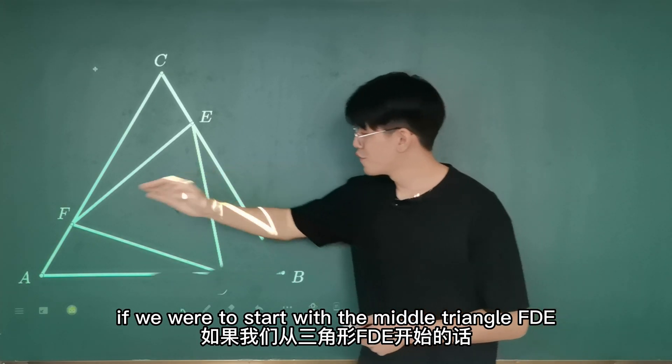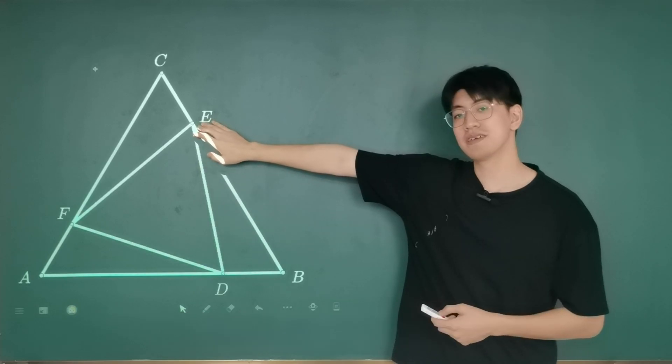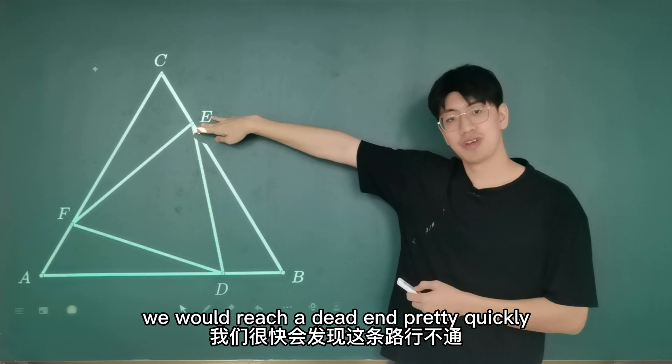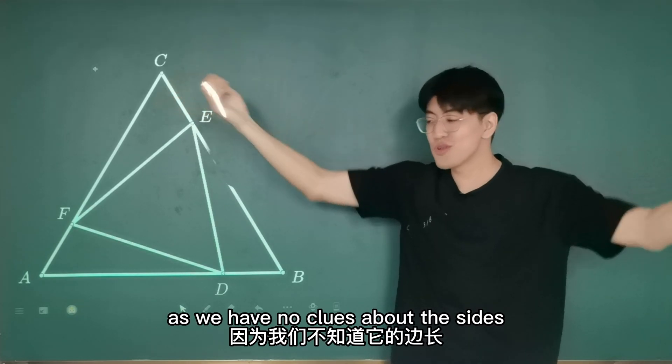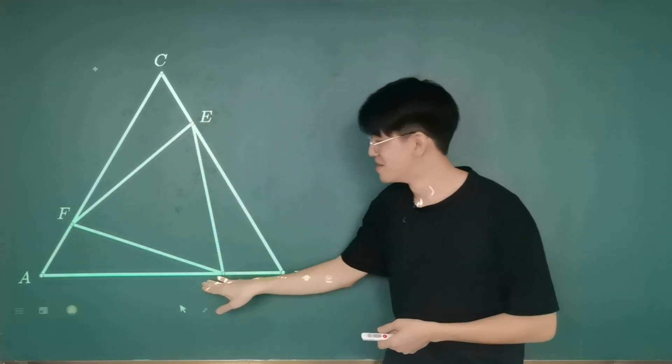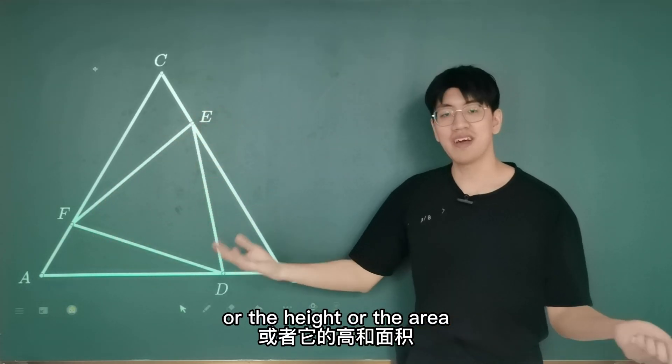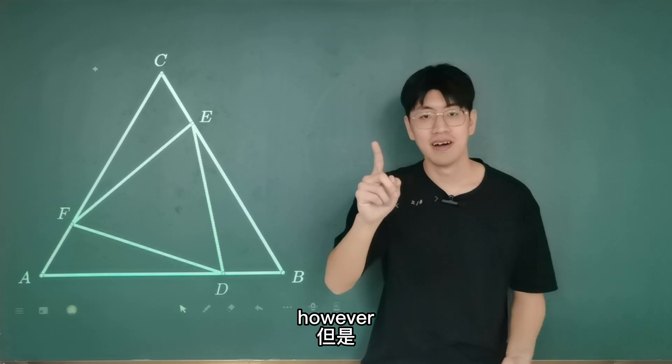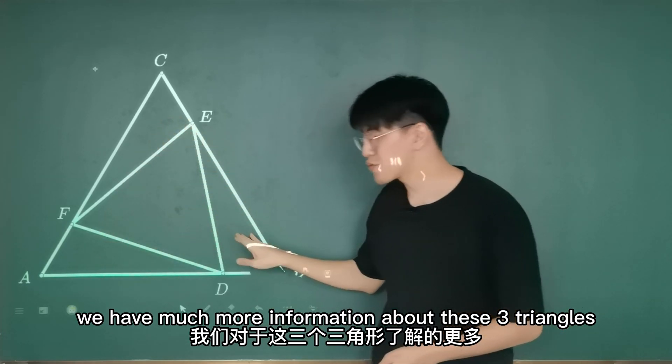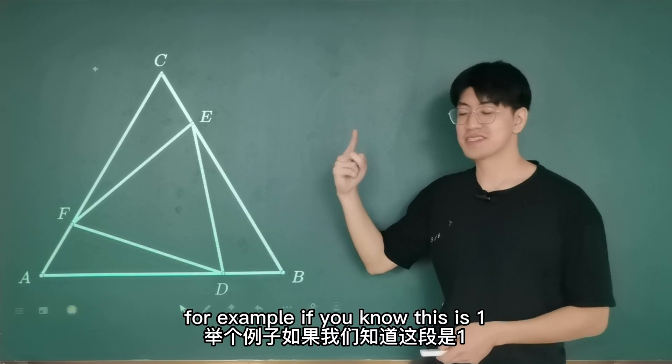Where do you think would be a better starting point for us to analyze? If we were to start with the middle triangle FDE, we would reach that end pretty quickly, as we have no clues about the sides, or the height, or the area. However, we have much more information about these three triangles. For example,